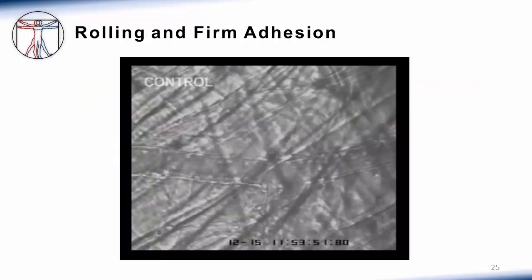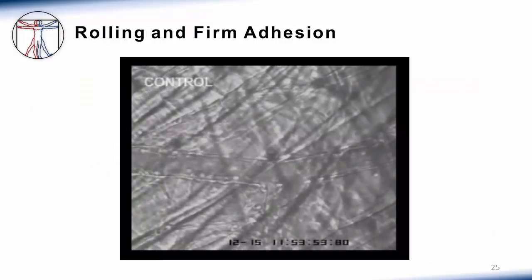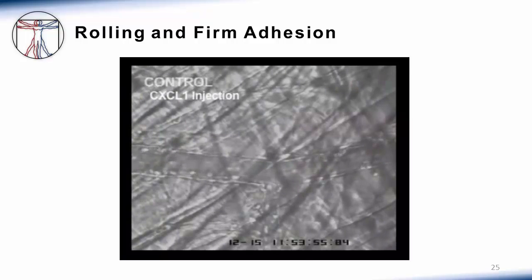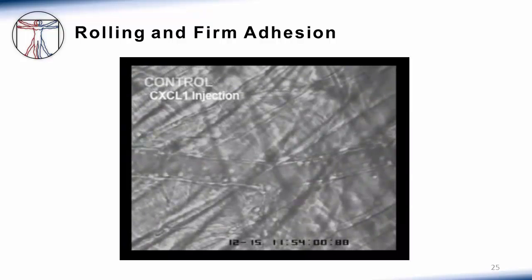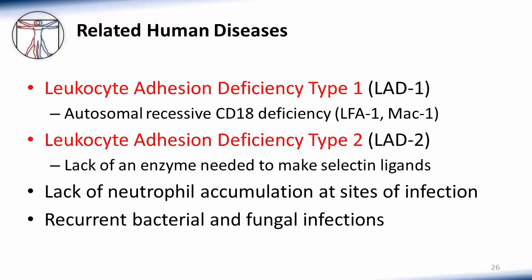You can see this process occurring when you perform intravital microscopy. In this video, cells can be seen rolling across the endothelial surface. When a chemokine is added, the cells stop and firmly adhere to the endothelium.